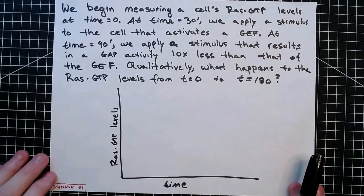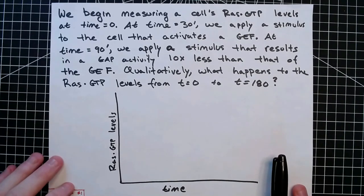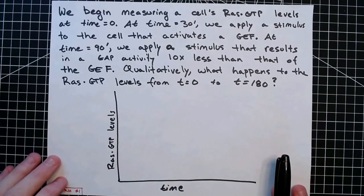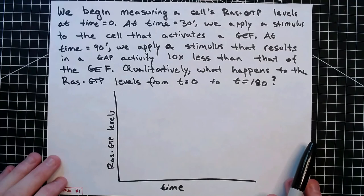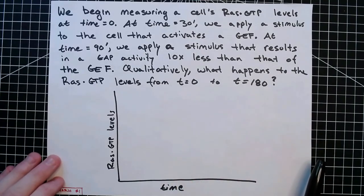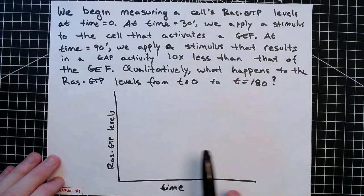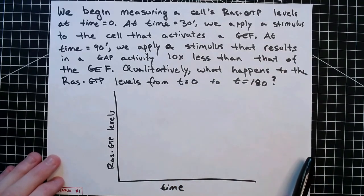We're going to go through a few different scenarios where we stimulate a cell and ask what happens to RAS-GTP levels. Let's say we begin measuring a cell's RAS-GTP levels at time zero. At time 30 minutes, we apply some sort of stimulus to the cell that's going to activate a GEF protein. Then at time 90 minutes, we apply a second stimulus that's going to result in GAP activity in the cell.